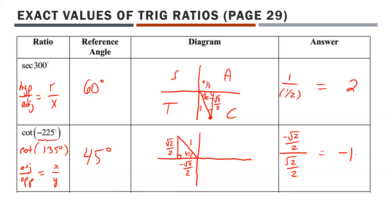It makes sense this should be negative 1 from the CAST rule. In quadrant 2, only sine is positive. Cotangent is related to tan, and tan is positive in quadrants 1 and 3, so tan — and therefore cotangent — is negative in quadrant 2.